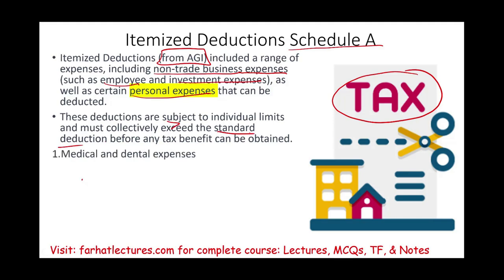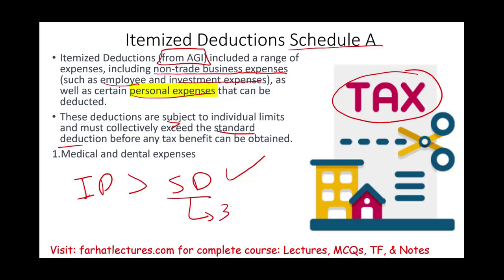If your itemized deduction is greater than your standard deduction, then they are useful and you can benefit from them. This deduction is given by the government every year based on your filing status. For example, married filing jointly — this number changes every year, but let's assume it's $30,000. You add up all of your itemized deductions, and if they are greater than $30,000, you would use itemized deductions.